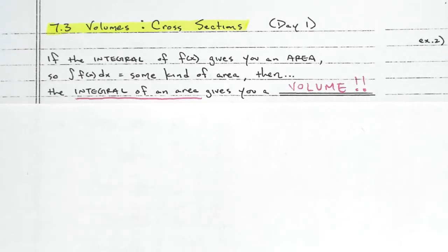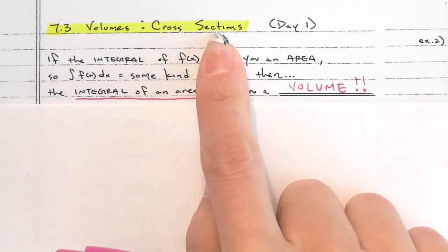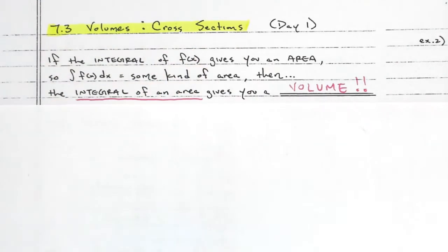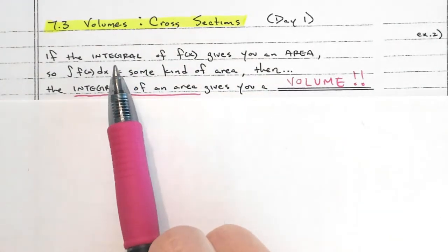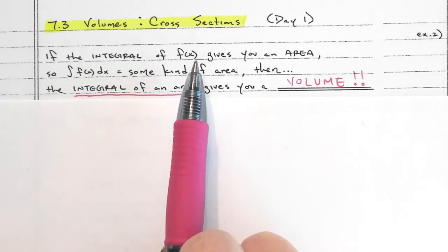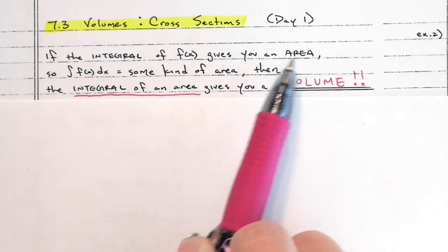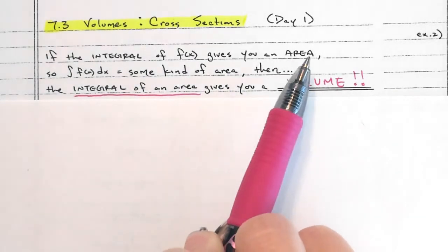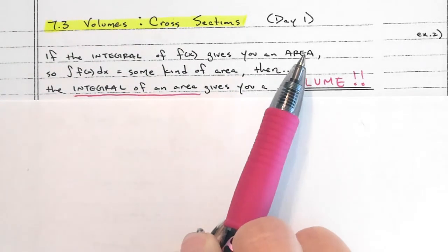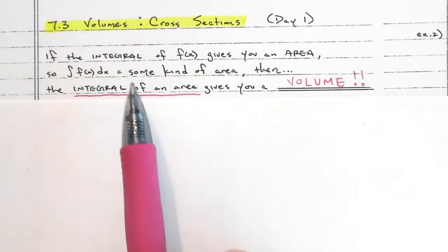Hey guys, so 7.3 cross-sections. This is the first day of 7.3 because there are multiple days of volumes. Cross-sections is the easiest one to understand first. The big thing to understand is, when you take an integral of some function, you're really looking for an area — the area between the function and the x-axis. Sometimes it's positive; if it's underneath, it's negative, but it still gives you an area.